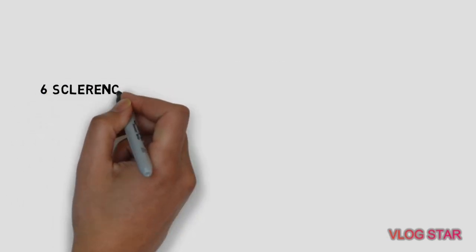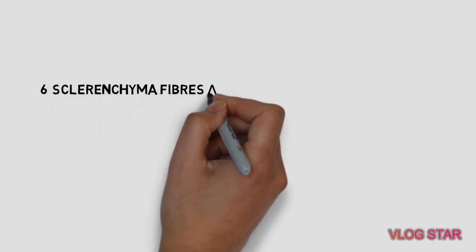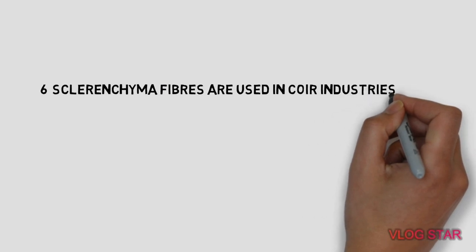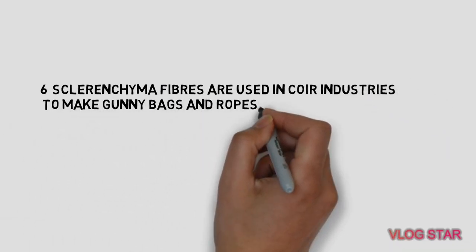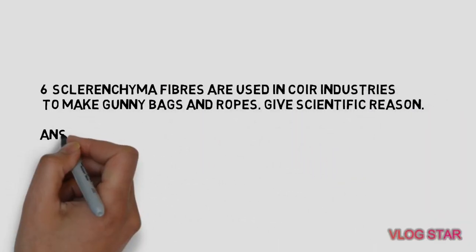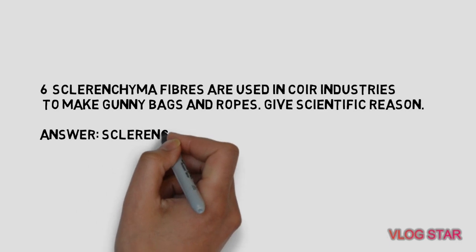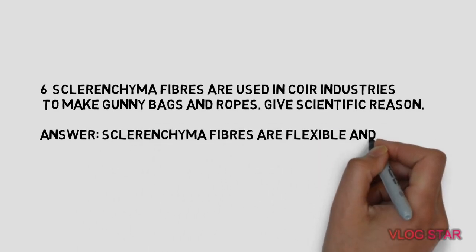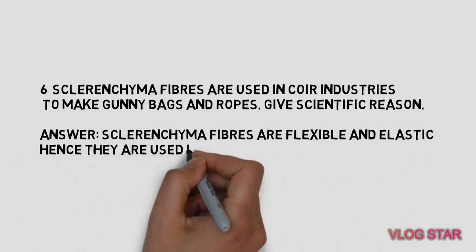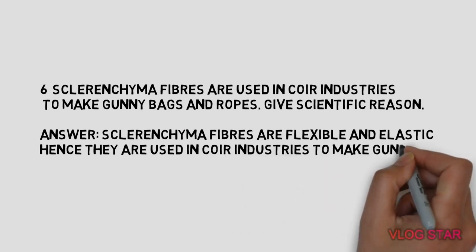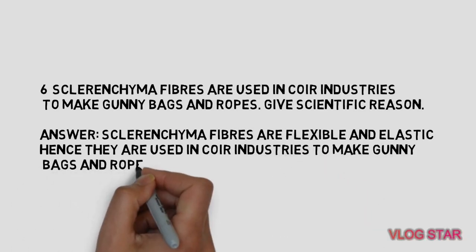Exclerantium fibers are used in coir industries to make gunny bags and ropes. Give the scientific reason. Exclerantium fibers are flexible and elastic, hence they are used in coir industries to make gunny bags and ropes.